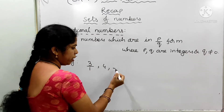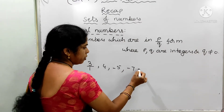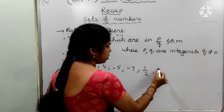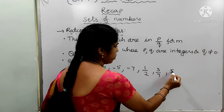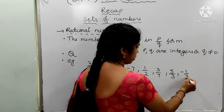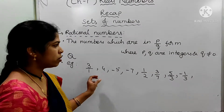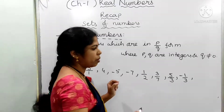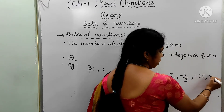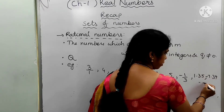Examples of rational numbers include positive integers like 4, negative integers like -5 and -7, and also fractions such as 1/2, 3/7, 5/3, and -1/3. Decimal numbers are also rational numbers, for example 1.35 and -7.39.